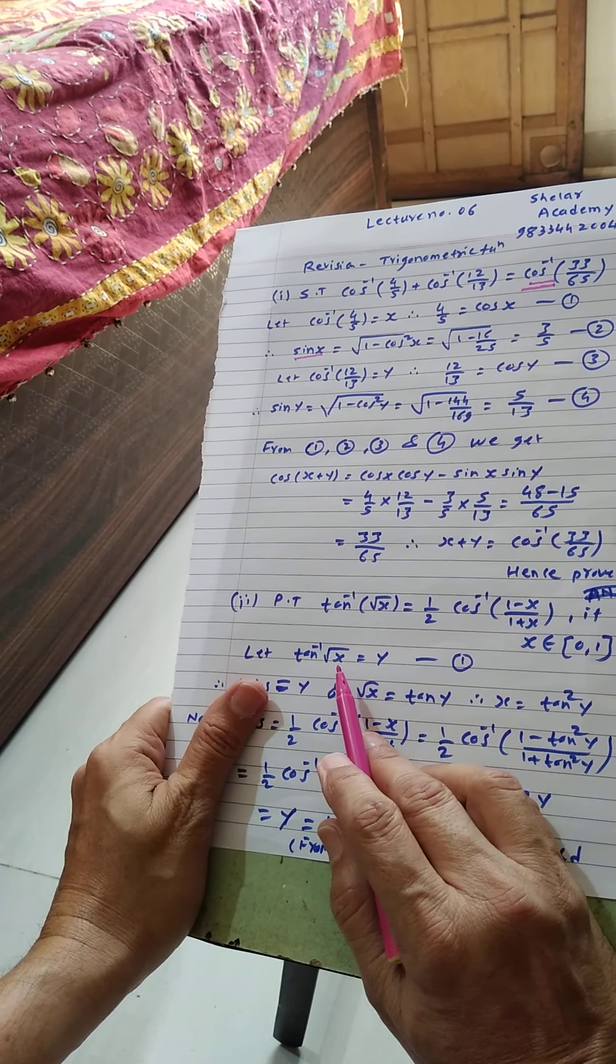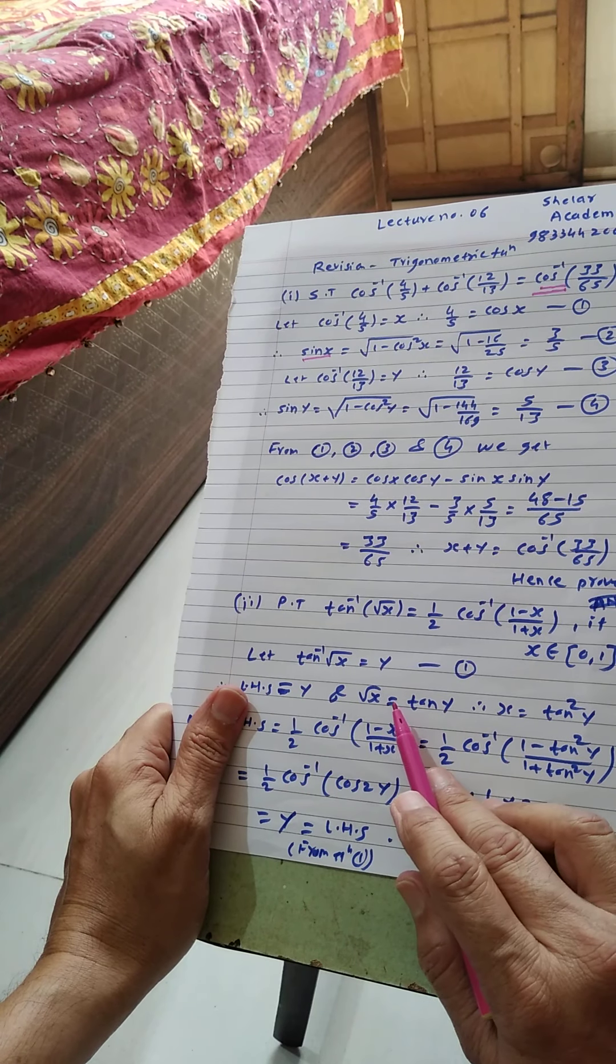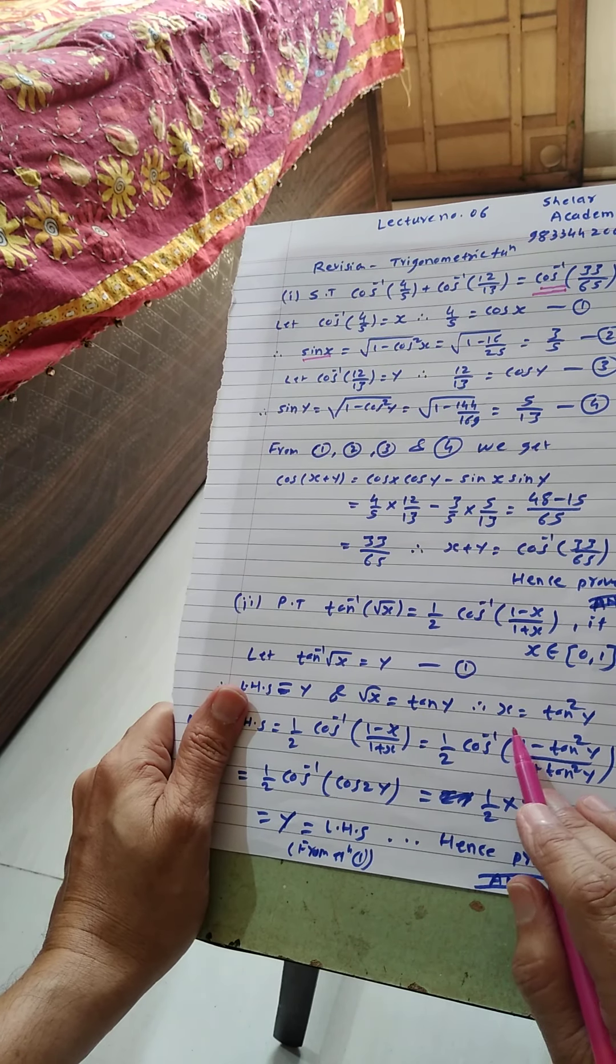Now let tan inverse of root x is equal to y, equation number 1, that is LHS is y. Therefore root x is equal to tan y, x is equal to tan square y.